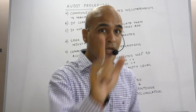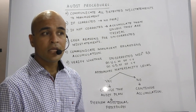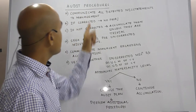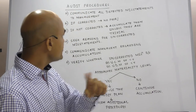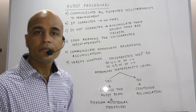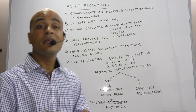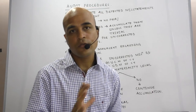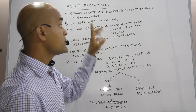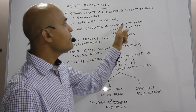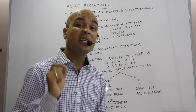He should communicate them immediately to the management. If there is an undetected misstatement, communicate that to management and ensure that it is corrected. If the misstatement is corrected, there is no problem whatsoever. But if the misstatement is not corrected, the auditor will have to accumulate them unless they are trivial.